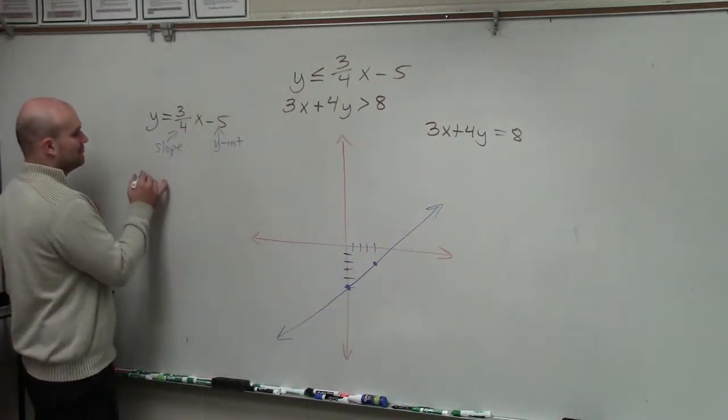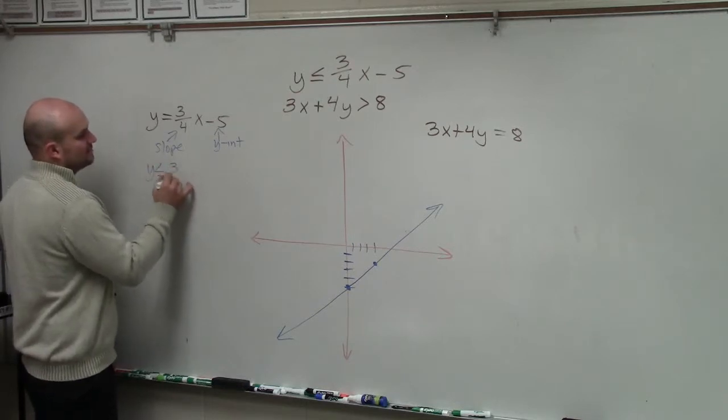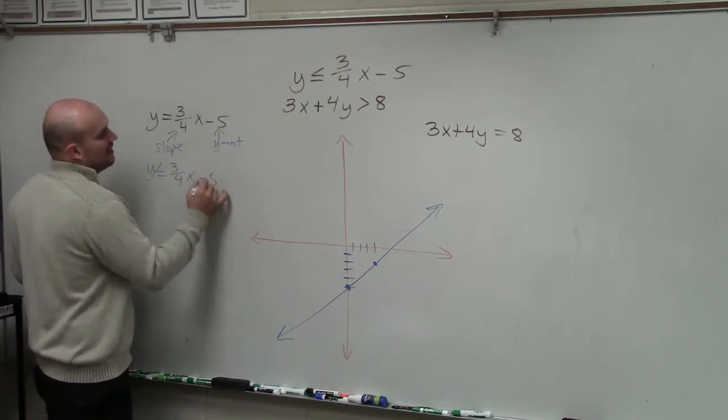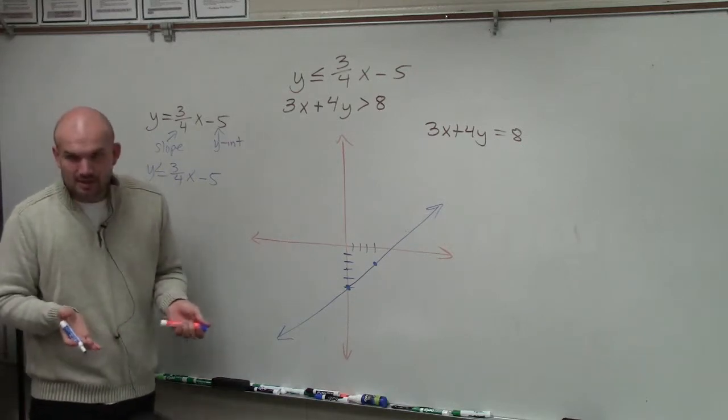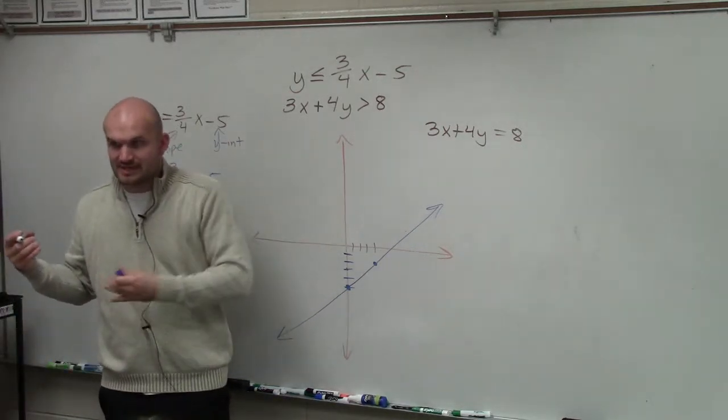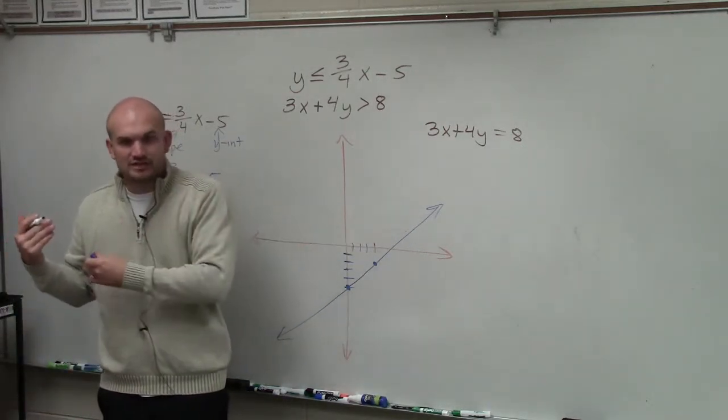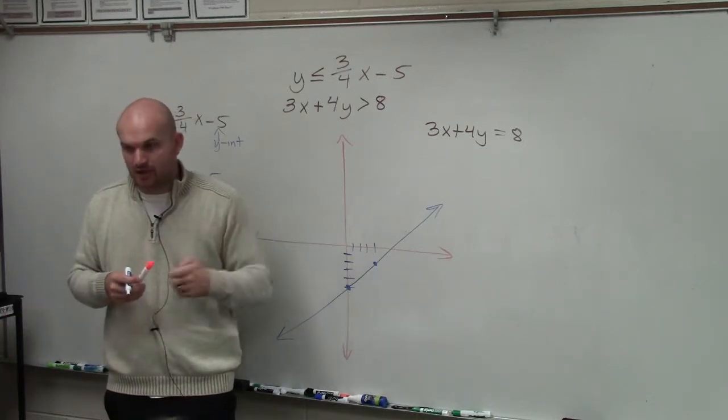Now, the next thing we're going to do is I'm going to rewrite it back as it is. Or you can just put in this sign. Now, the next thing I need to do is I need to use a test point. Remember when we had linear equations and we had to test, should I shade to the left or should I shade to the right? Or when we had one variable inequalities, right?